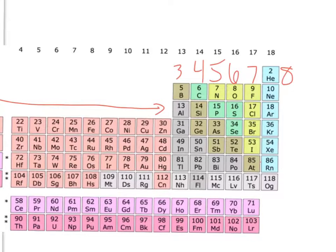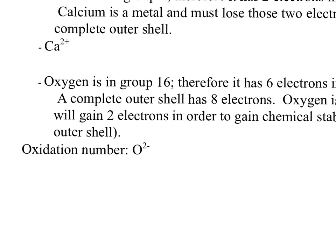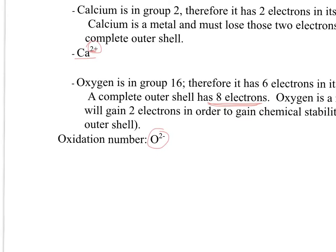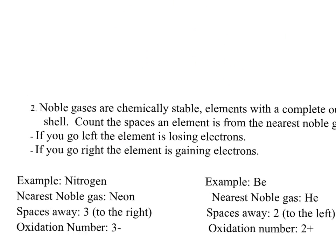Oxygen, for instance, is in group 16 and has six electrons in its outer shell. The octet rule says it needs eight, so it needs two more. A common mistake is to write negative six — do not write negative six. The oxidation number is not how many electrons it has; it's how many it needs to gain or lose to have a full outer shell.